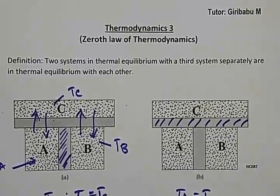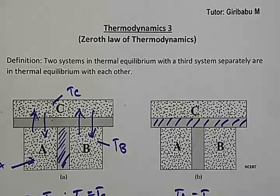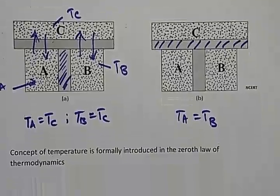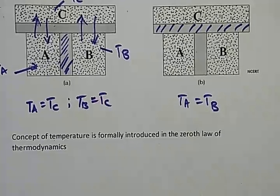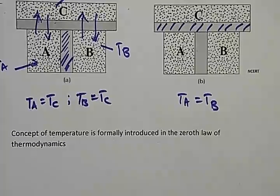This is the important definition: two systems in thermal equilibrium with a third system separately are in thermal equilibrium with each other. Here, for the first time, the concept of temperature is formally introduced — in the Zeroth Law of Thermodynamics.